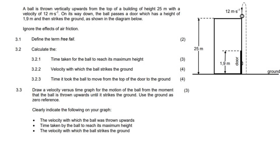A ball is thrown vertically upwards from the top of a building of height 25 meters with a velocity of 12 meters per second. On its way down, the ball passes a door which has a height of 1.9 meters and then strikes the ground as shown in the diagram.